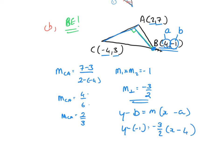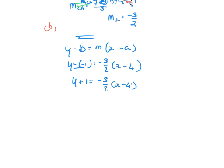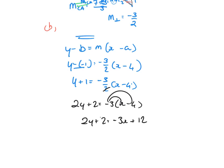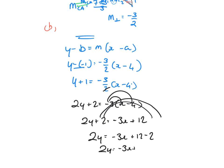Substituting into y - b = m(x - a): y - (-1) = -3/2 × (x - 4), so y + 1 = -3/2(x - 4). Multiplying through by 2: 2y + 2 = -3(x - 4) = -3x + 12. Rearranging: 2y = -3x + 12 - 2, and the final answer is 2y = -3x + 10.